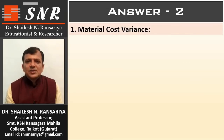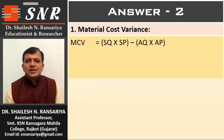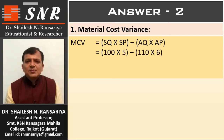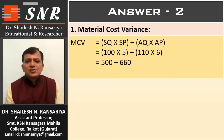First, material cost variance = SQ × SP minus AQ × AP. So, SQ 100 × SP 5 minus AQ 110 × AP 6. So, 500 minus 660. The variance is minus 160, adverse.